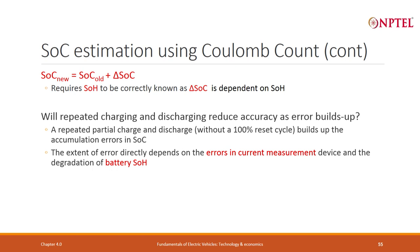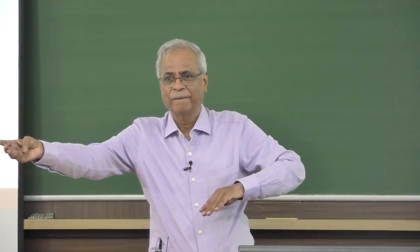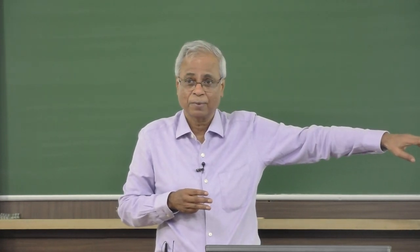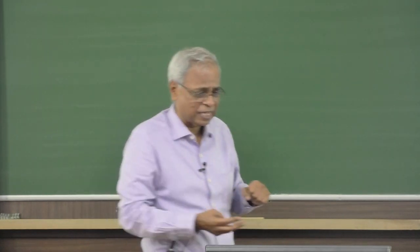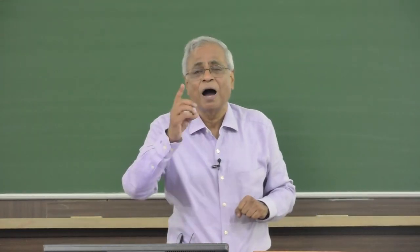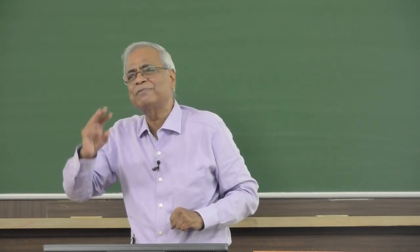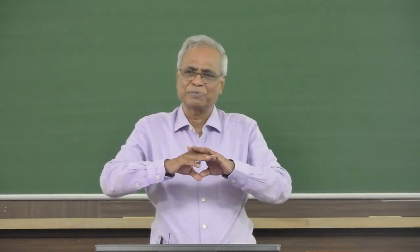Problem number three: there is another method called Coulomb counting, which is more accurate — but Coulomb counting only tells you the SOC now if you knew what the SOC was initially. So your initial estimate still depends on voltage with all the complications. Even the delta SOC you calculate depends on how accurately you know state of health and how accurately you have done the measurement. That itself causes the error to keep building up, making it very complex.